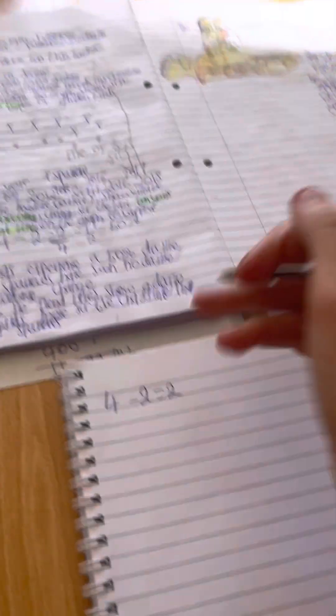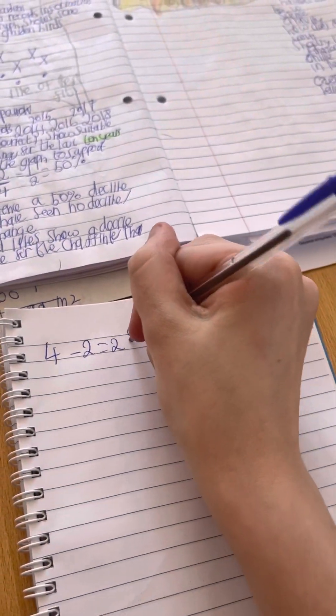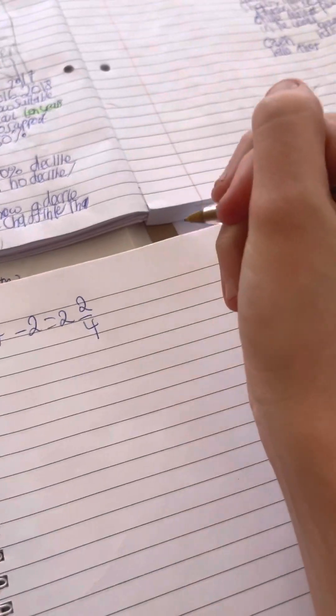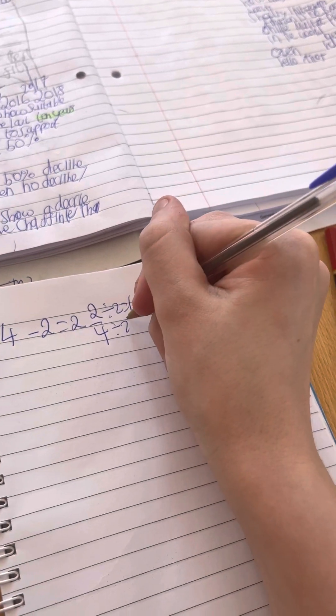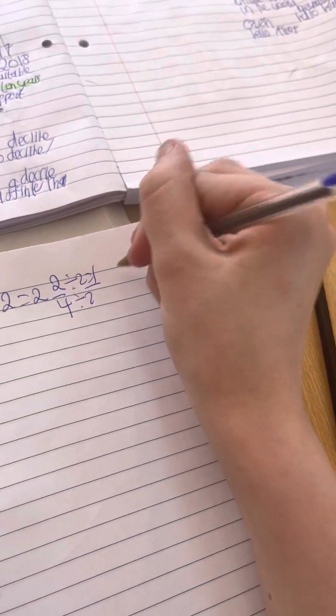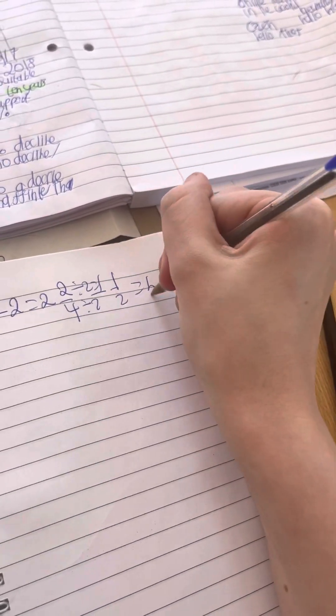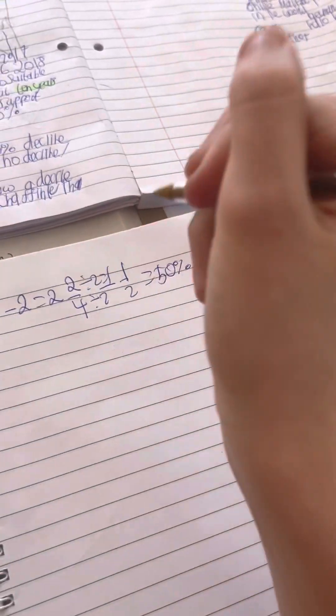So we've got to do 4 take away 2 is 2. Then there's a fraction, that would be 2 over 4. Then if we do 2 over 4, so if we do 2 divided by 2 that will give us 1, 4 divided by 2 will just give us 2. It's going to be a half. So half is obviously going to be 50%. So comment 1 it says.